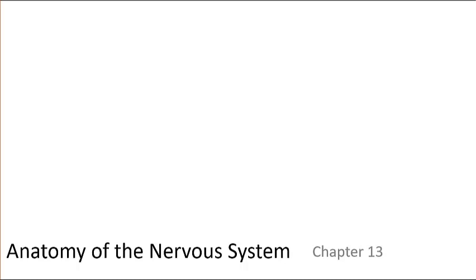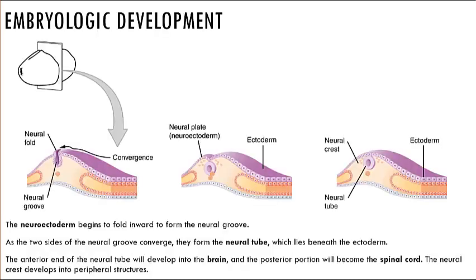In this video lecture we're going to be talking about the anatomy of the nervous system, with the focus on the central nervous system for the first part of this chapter. In order to study the brain, we have to examine the embryonic development of the brain. The brain and all other nervous tissue forms from the ectoderm during embryonic development.